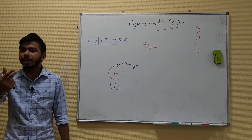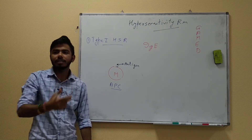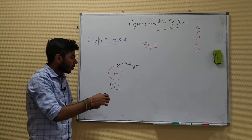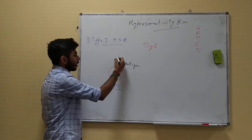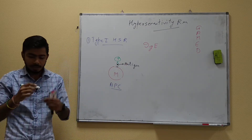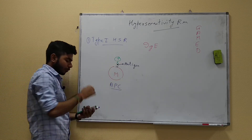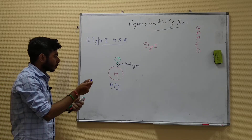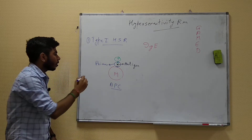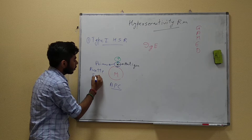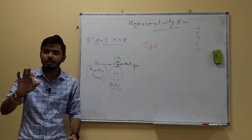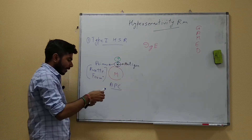The macrophage presents the antigen to the T helper cells. The T helper cell binds to the macrophage, forming a complex called a primer — some people also call it rosette formation. So we have this primer complex formed between the macrophage and the T helper cell.